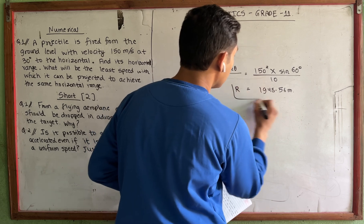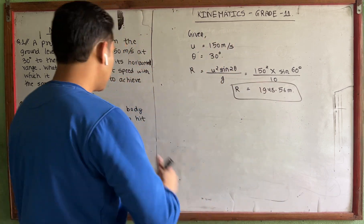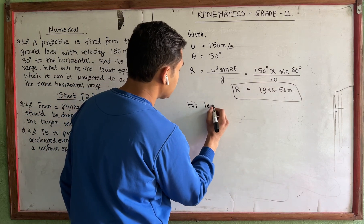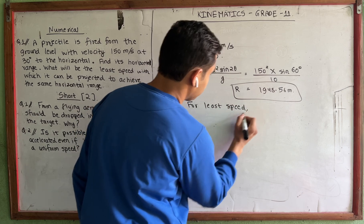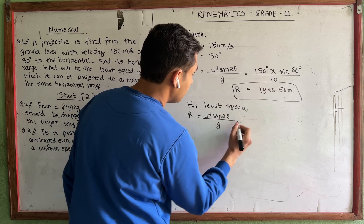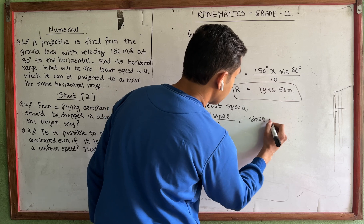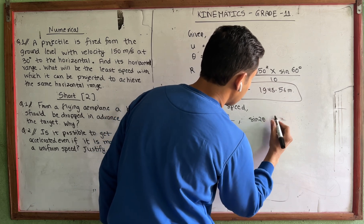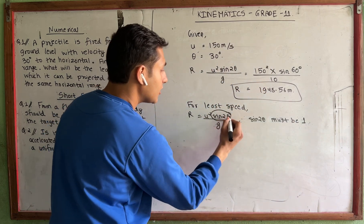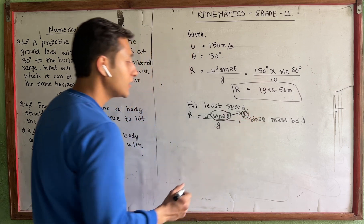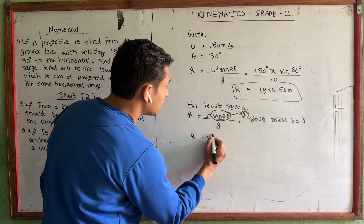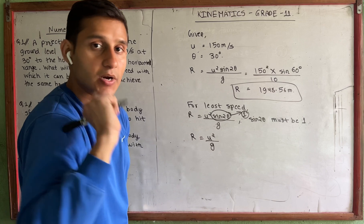So the value of R is 1948.56 meters. Now we find the least speed. For least speed, using the formula R equals u squared times sine 2 theta divided by g, sine 2 theta must be equal to 1 to minimize u. So when sine 2 theta equals 1, the formula becomes R equals u squared divided by g. Therefore, u equals the square root of R times g.